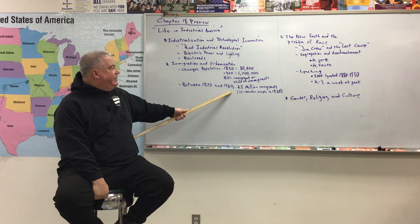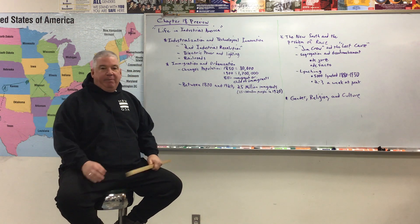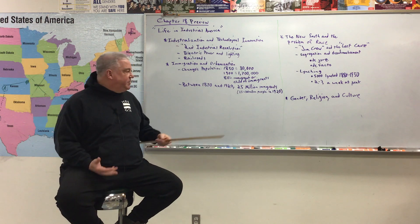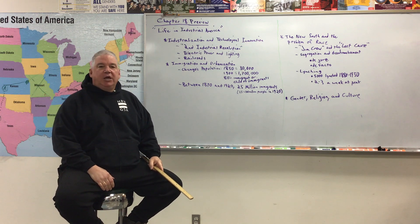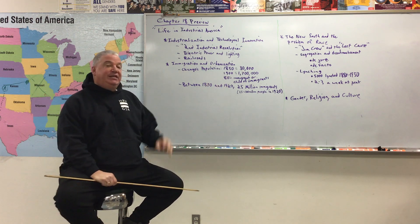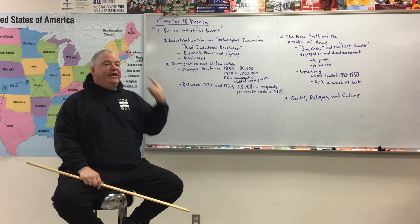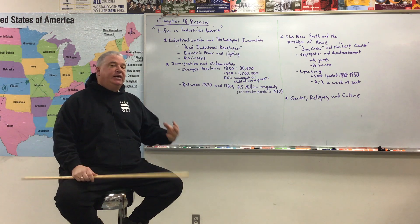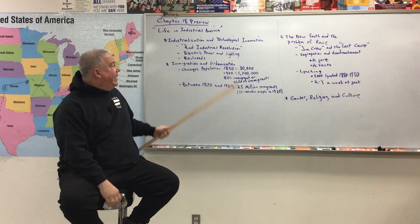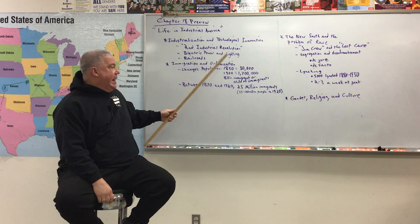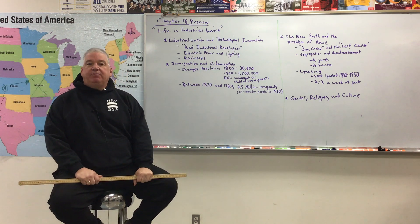Between 1870 and 1920, 25 million immigrants came to the United States. When I saw that number, I thought: let's get some perspective. The population of the United States in 1920 was 106 million people. So 25 million people coming from all over the world — that's really changing the culture of America. The changes brought about by industrialization and these huge waves of immigrants were scary to some people.